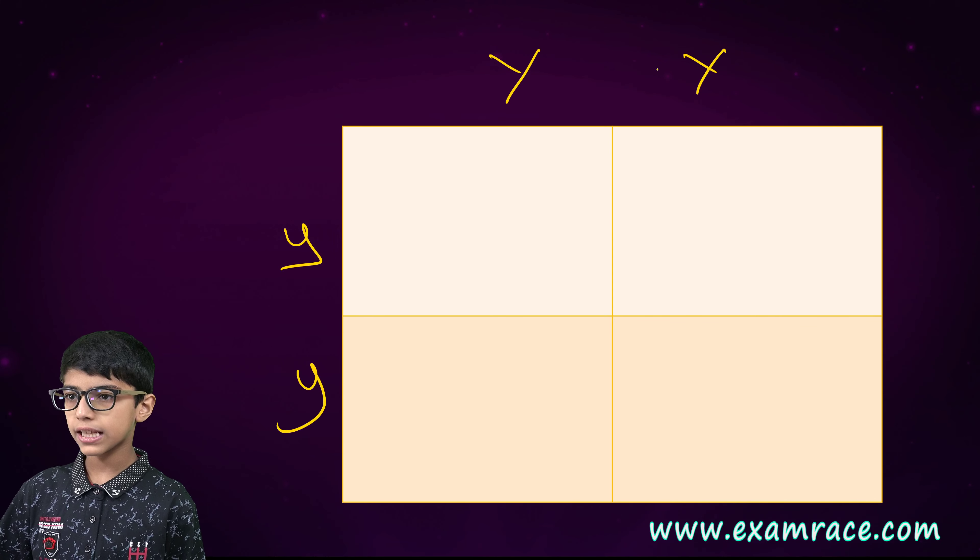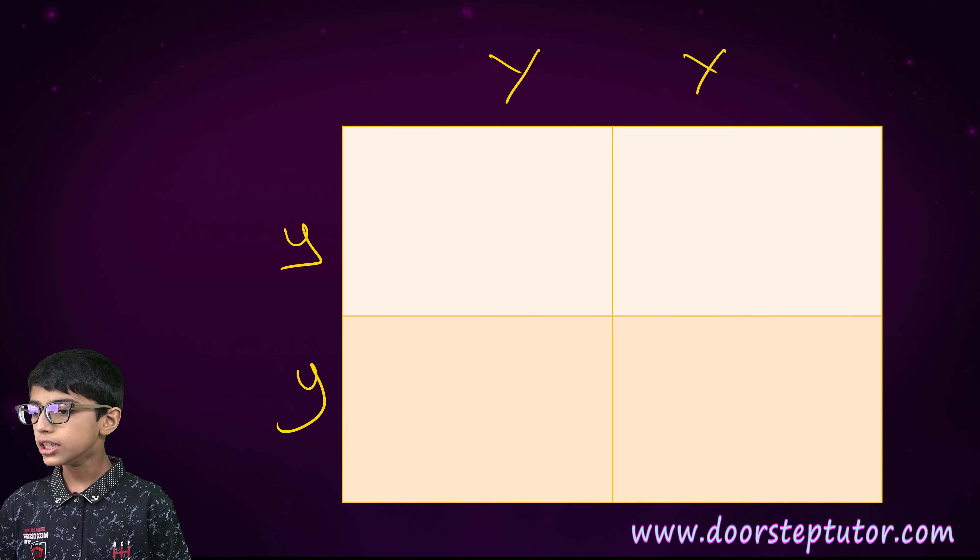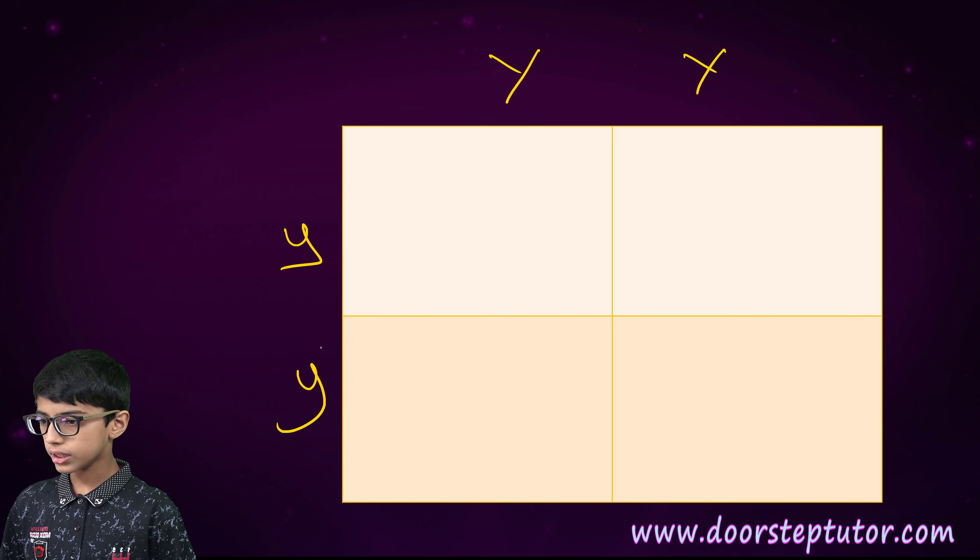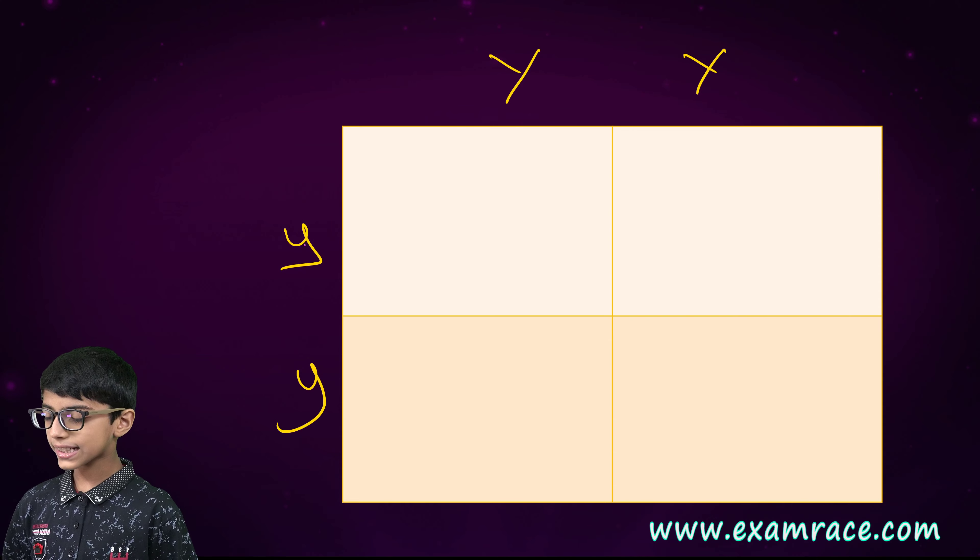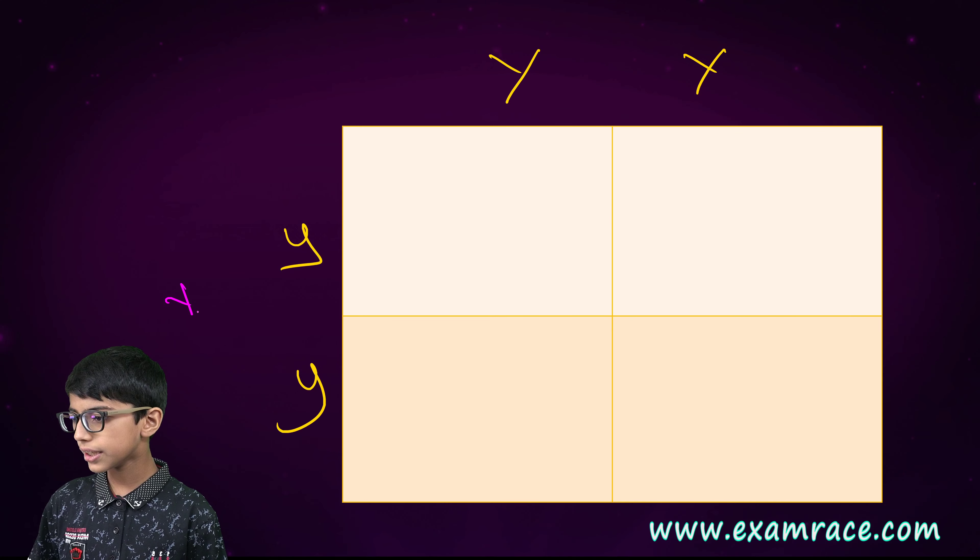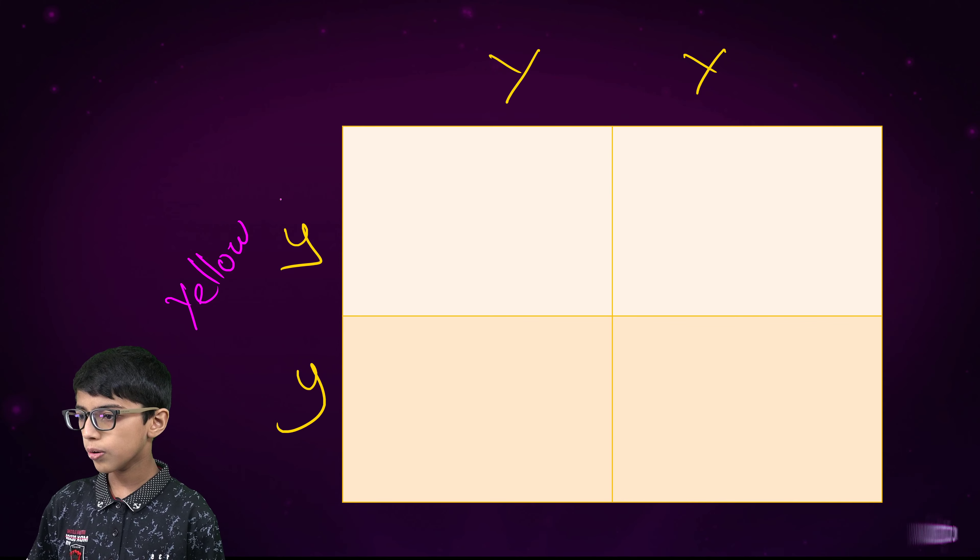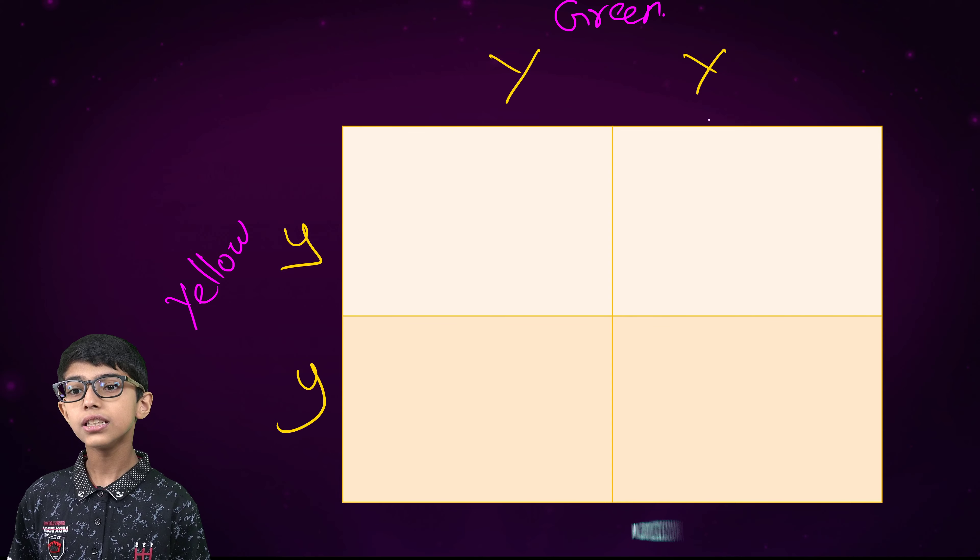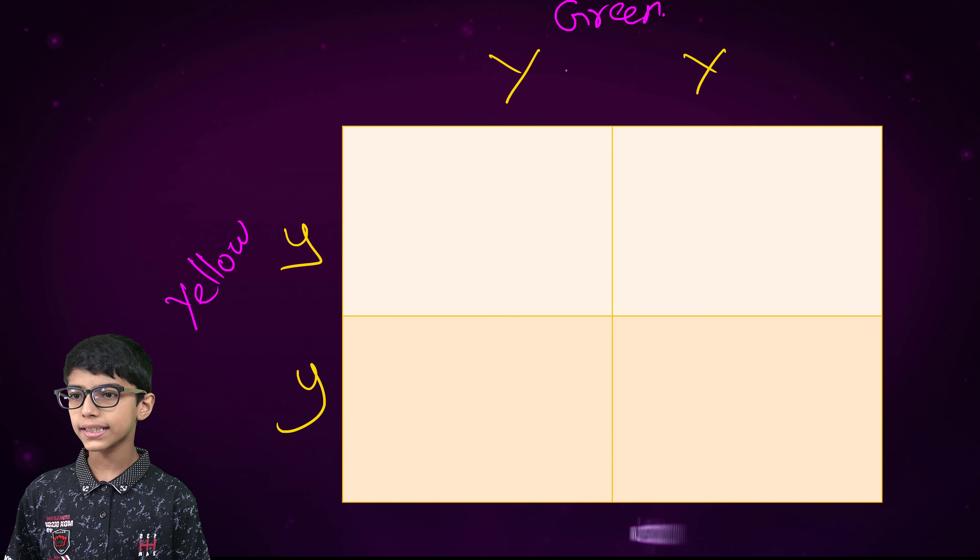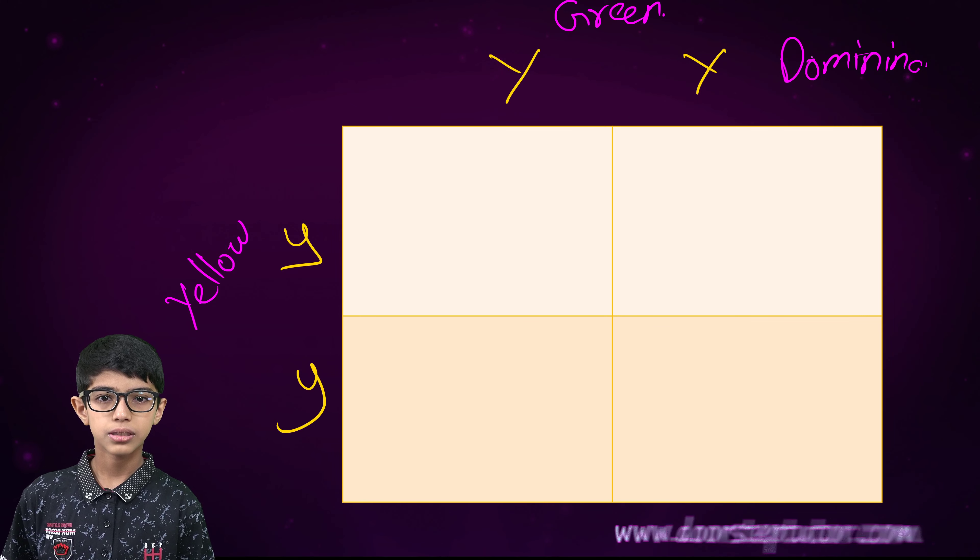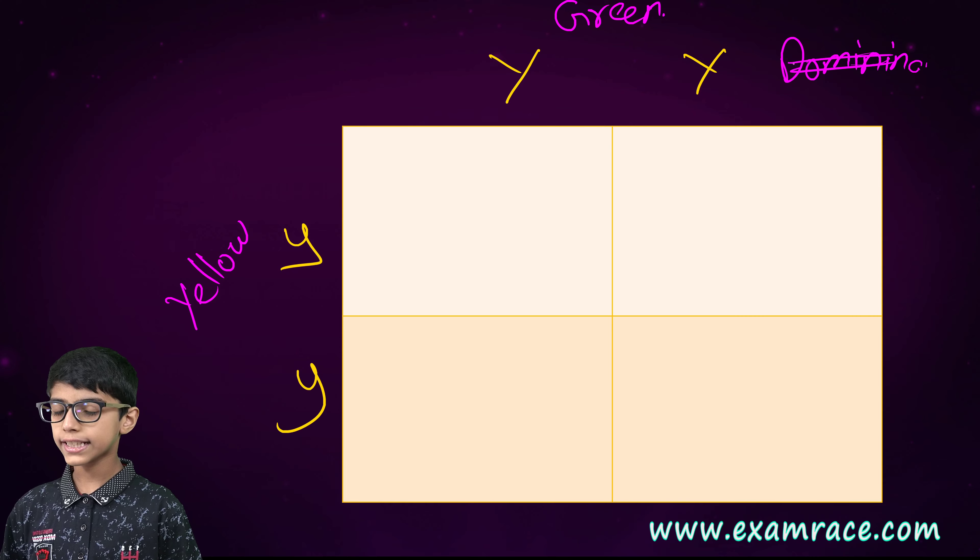Here we have capital Ys and small ys. Small ys denote the recessive, that is less powerful, and these denote yellow. The capital Ys denote green, that is more powerful and it is dominant.